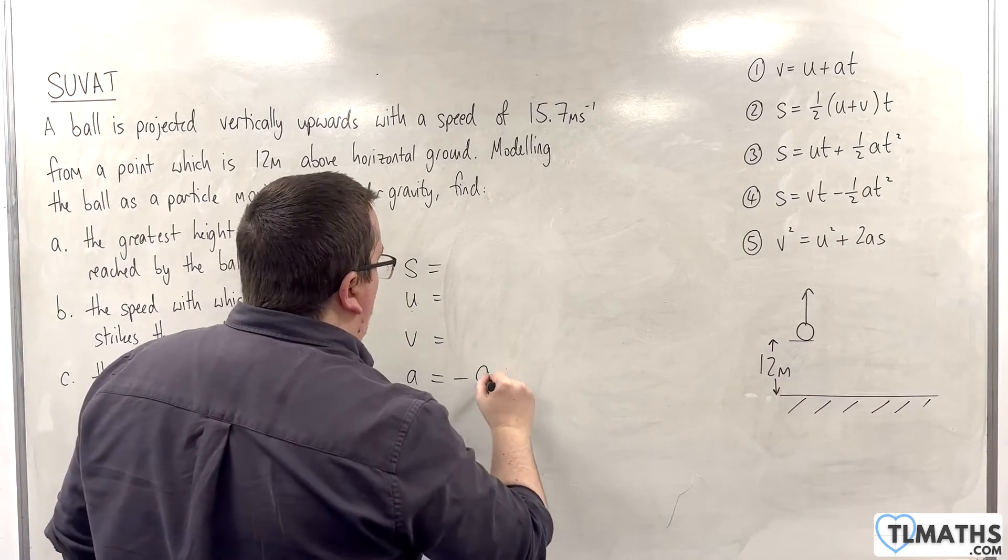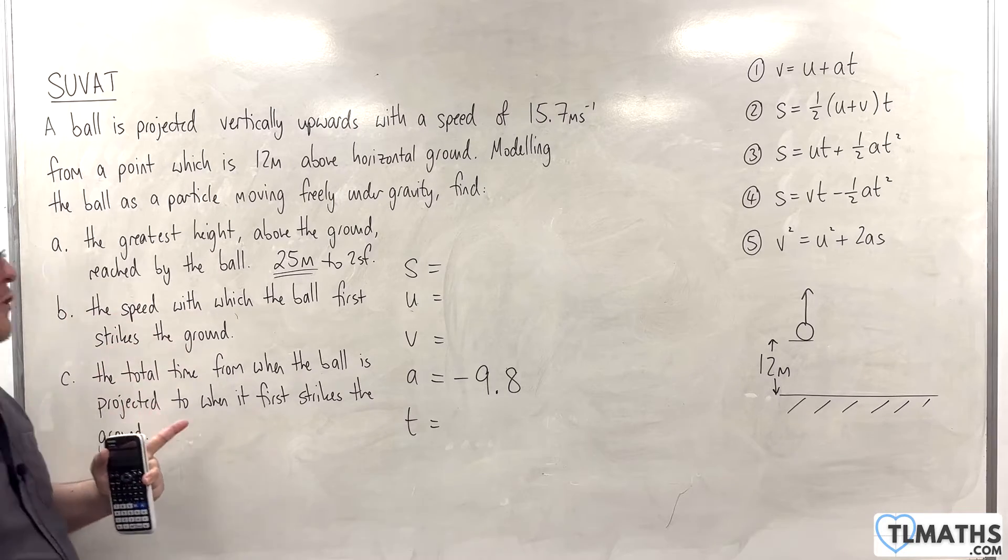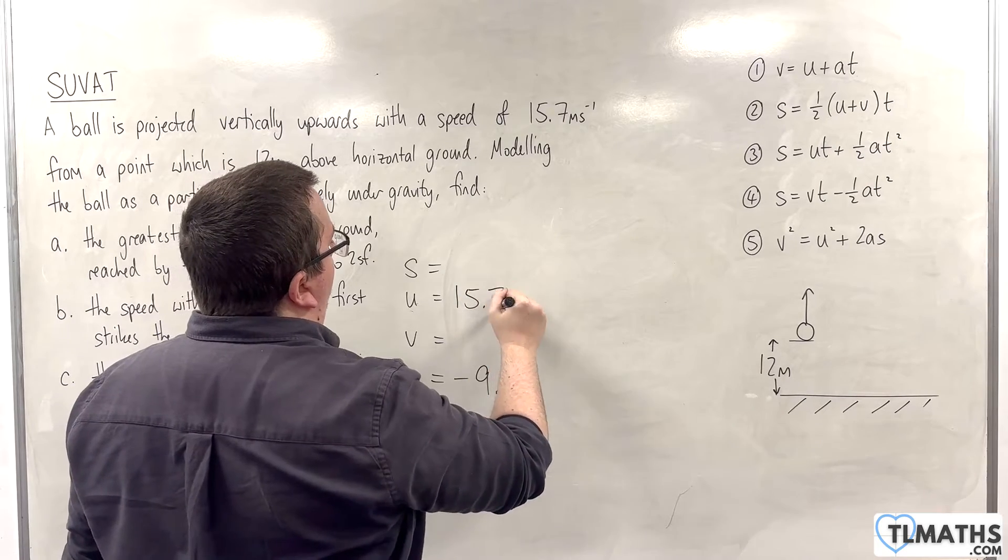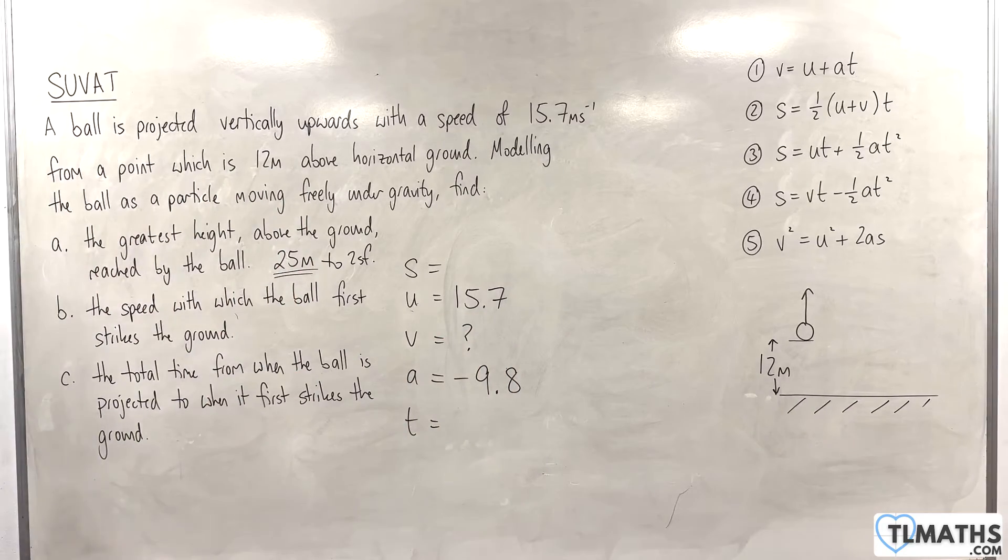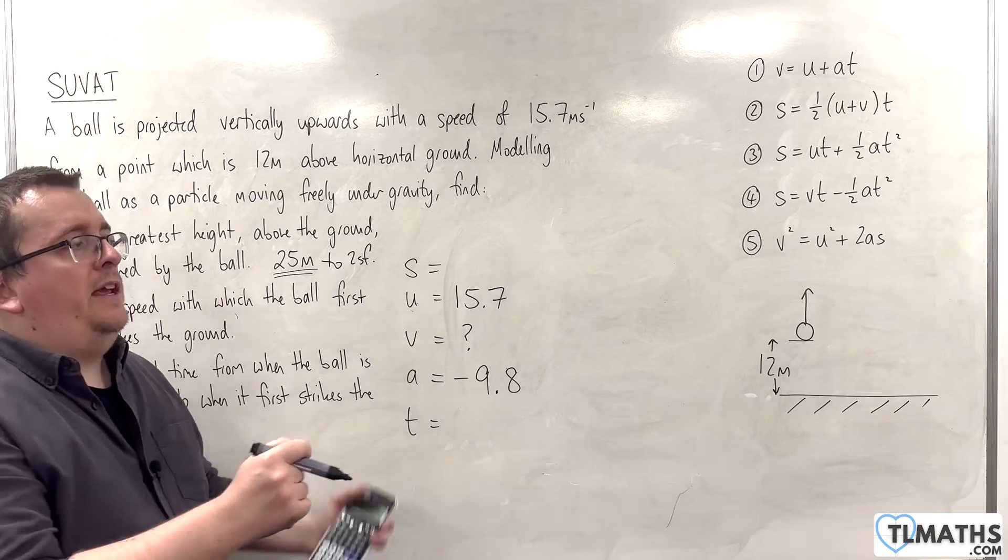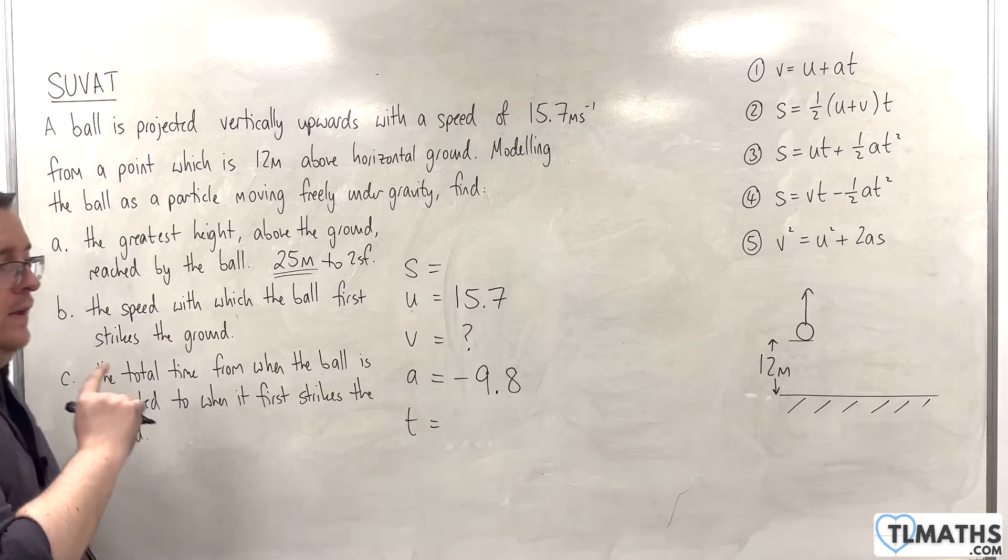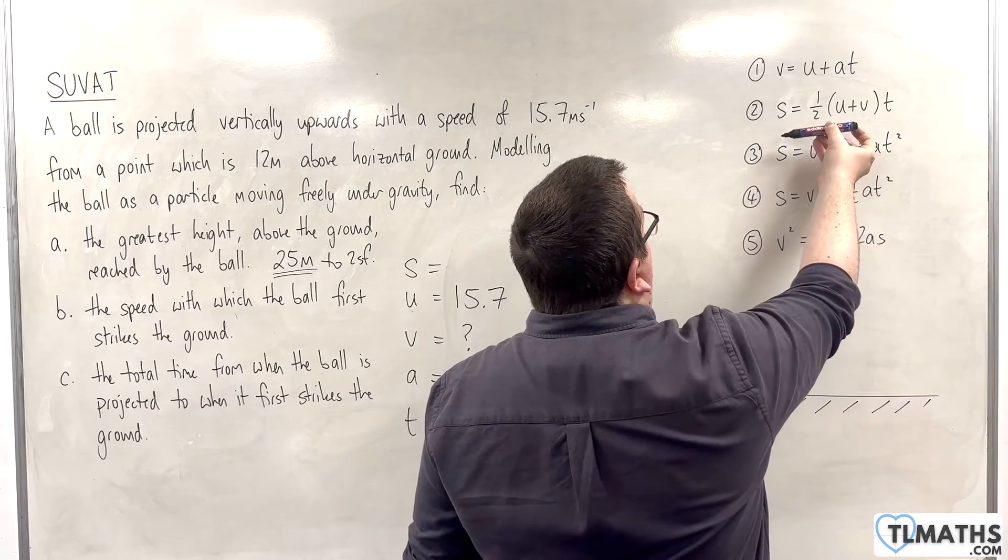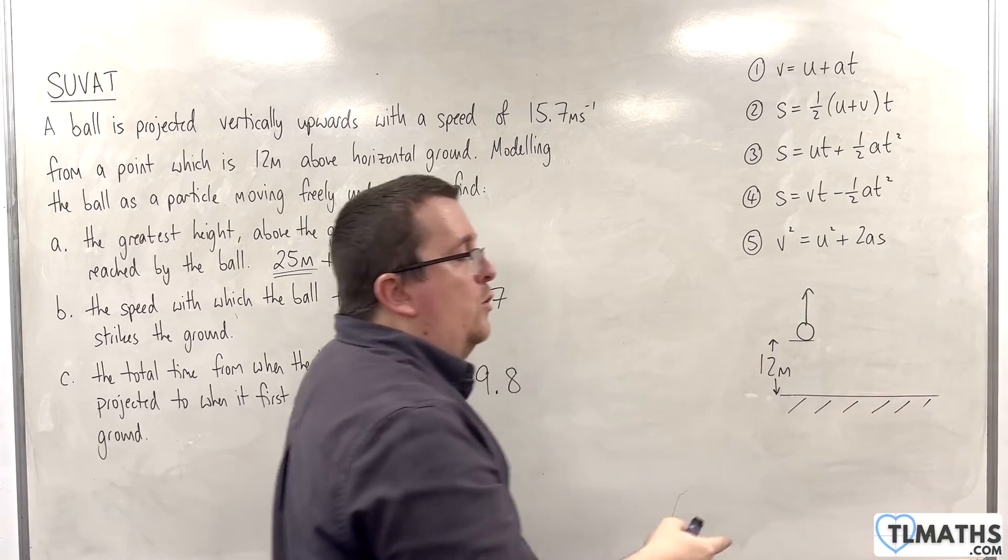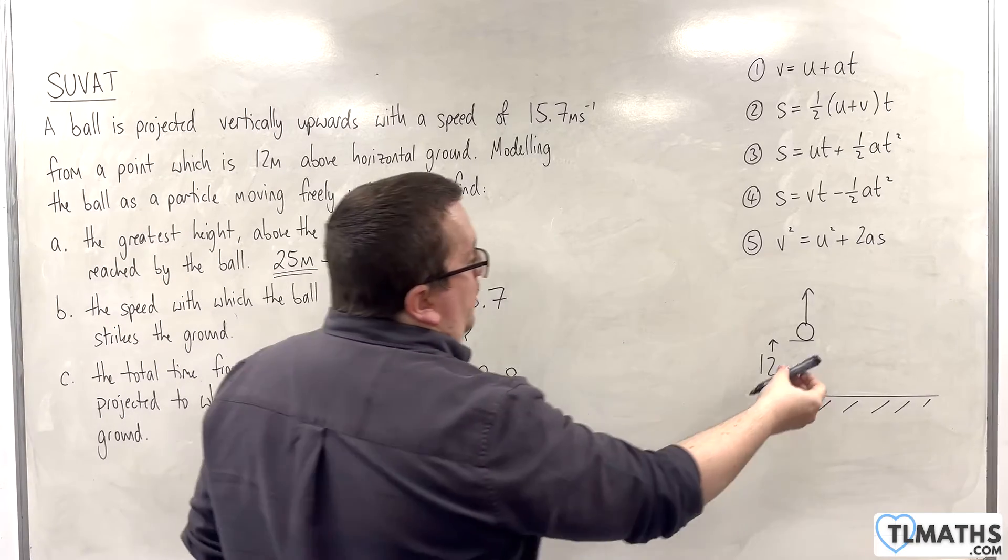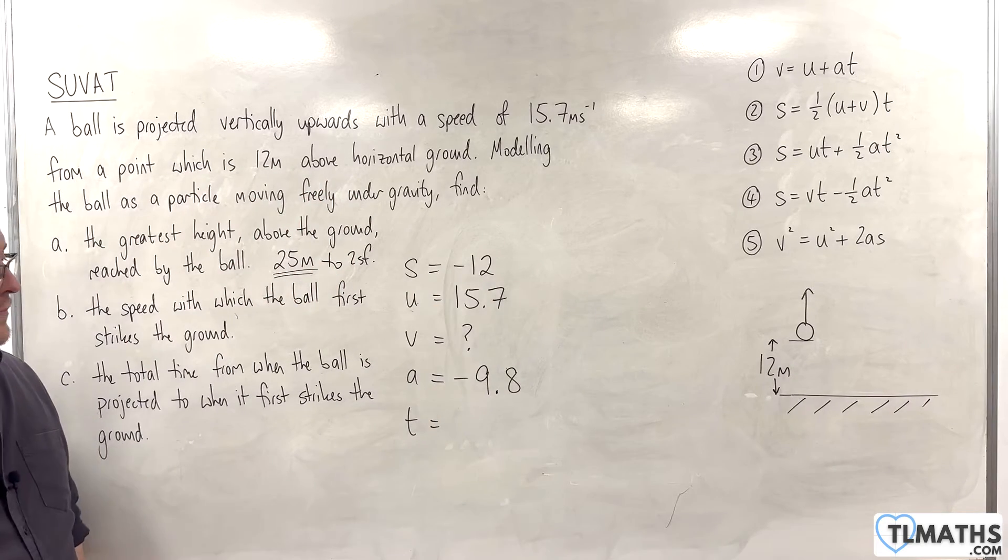The acceleration is still minus 9.8. I'm still going to take upwards as positive. The speed with which the ball first strikes the ground - I'm still going to take the initial velocity as 15.7, going upwards. The final velocity is what I'm interested in. What's important here is, what do I know about where the particle is when it strikes the ground? When it strikes the ground, the ball is 12 metres below where it started. So, its vertical displacement S from where it started is minus 12 metres.